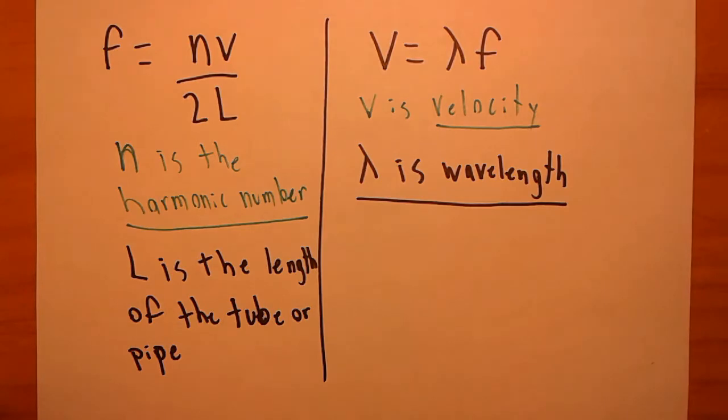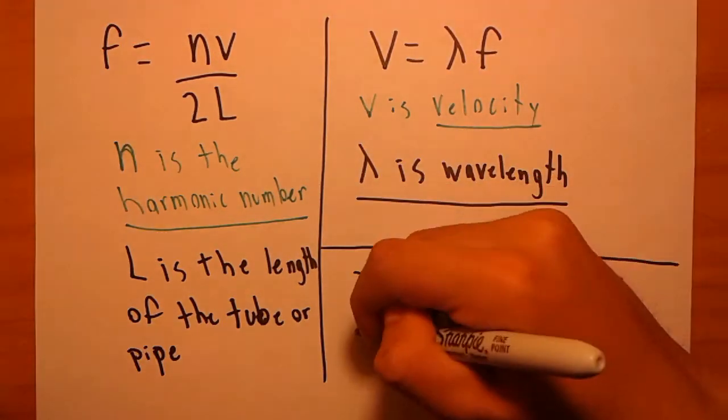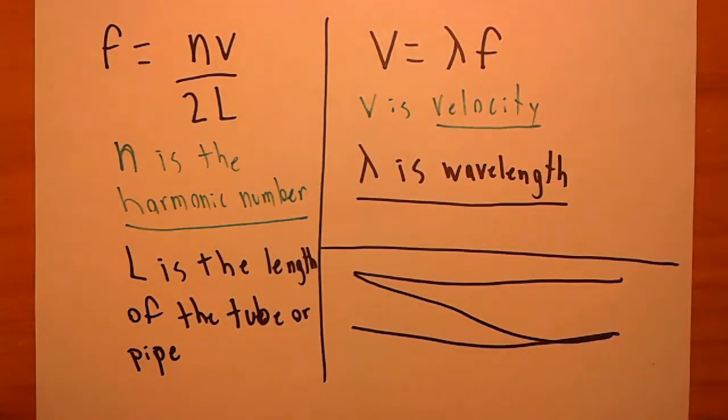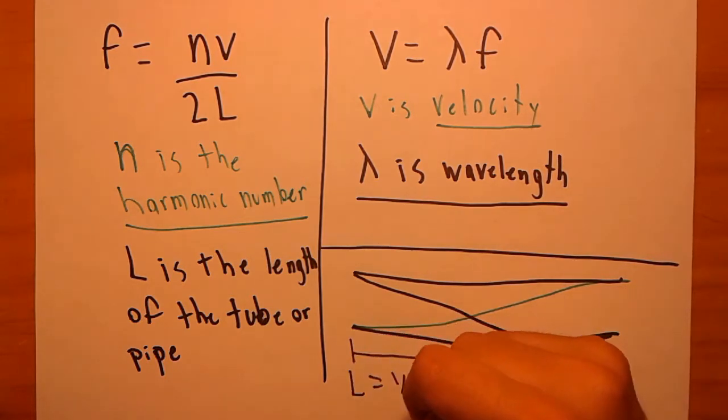Here we have the fundamental frequency for the recorder. n equals one, and the length of the tube is half the wavelength. This shows that if the length of the tube doubles, so will the wavelength, and since velocity is constant, frequency must be half.